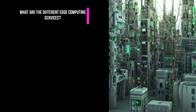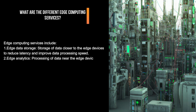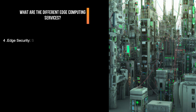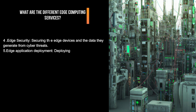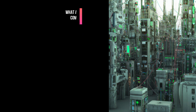What are the different edge computing services? Edge computing services include: edge data storage, which involves storing data closer to the edge devices to reduce latency and improve processing speed; edge analytics, for processing data near edge devices to enable faster insights and decision-making; edge networking, providing reliable and high-speed connectivity between edge devices and the cloud; edge security, securing edge devices and the data they generate from cyber threats; edge application deployment, for managing applications at the edge to enhance efficiency and reduce network congestion; and edge hardware solutions designed to work with edge computing architecture.